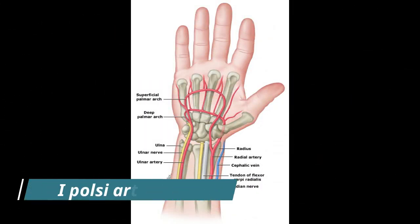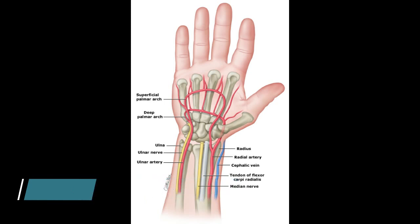La scelta del sito per la puntura arteriosa è il primo passo nell'esecuzione della tecnica. Le arterie tra cui è possibile scegliere sono l'arteria radiale, brachiale, femorale e dorsale del piede. Tra queste, il sito più comunemente scelto è il radiale, la cui puntura è associata a un maggior comfort per il paziente e alla minore incidenza di complicanze. Nel video che seguirà, il sito scelto per la puntura arteriosa sarà l'arteria radiale.